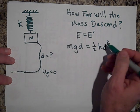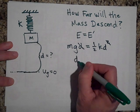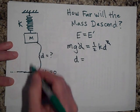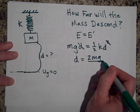Okay, we can get rid of one of the D's and it looks like the D, the maximum distance it will go down, is going to be equal to 2MG over K.